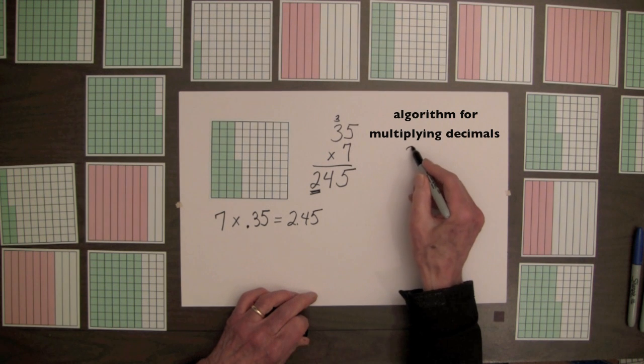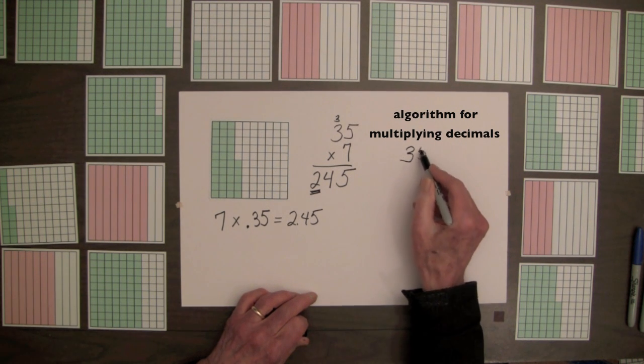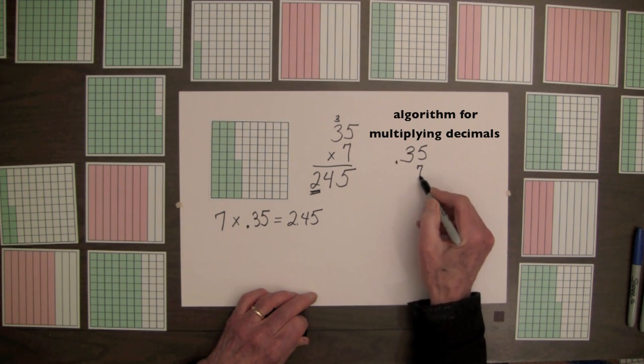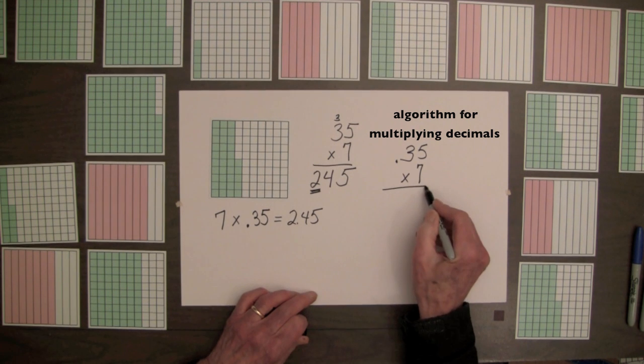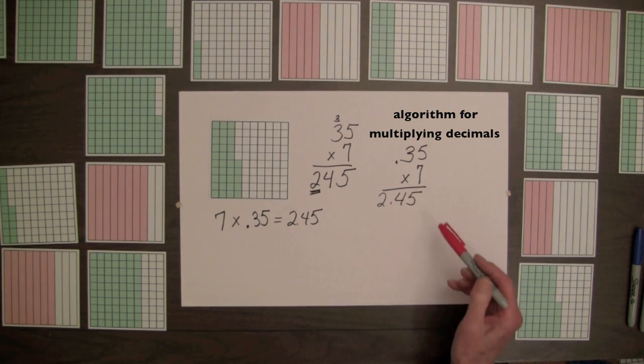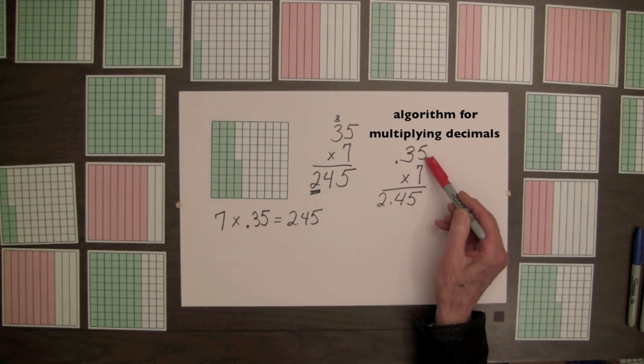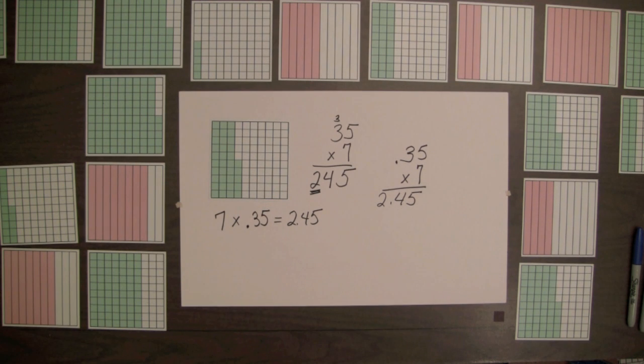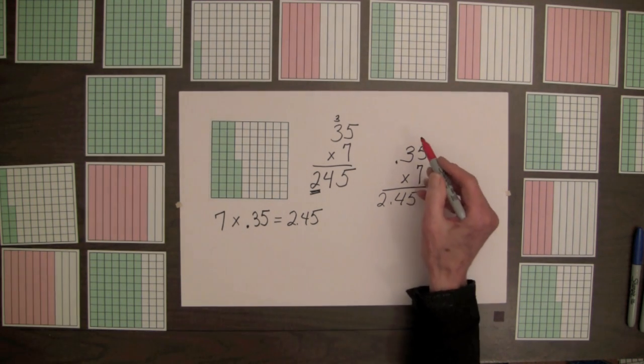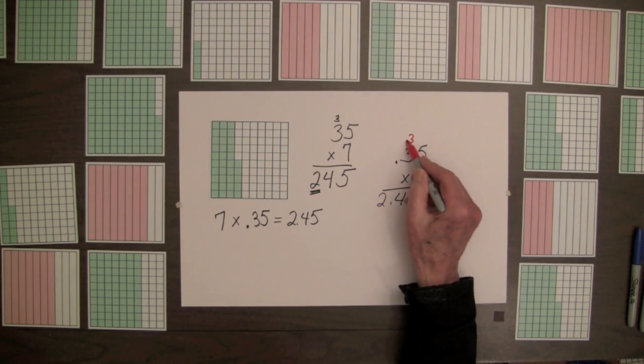The algorithm for multiplying decimals is similar to the algorithm for multiplying by whole numbers. In this product, 7 times 5 hundredths is 35 hundredths, and 30 hundredths is regrouped as 3 tenths to the tenths column.